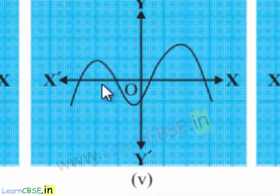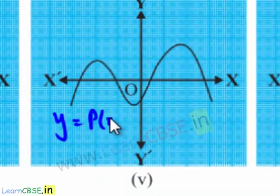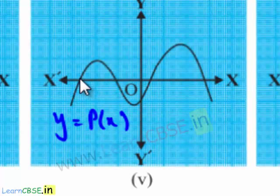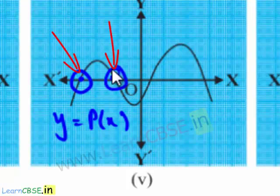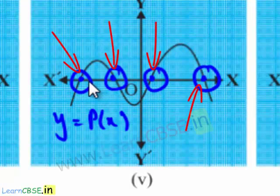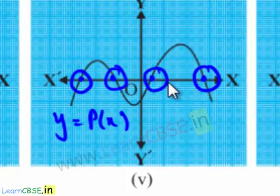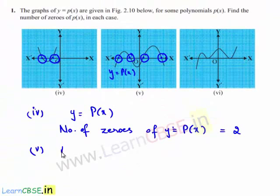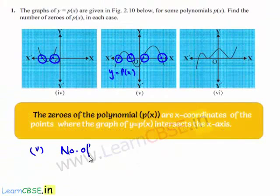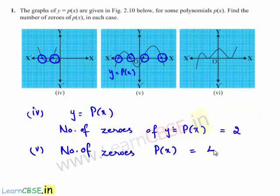In the fifth case, the graph y equal to p of x is intersecting the x-axis at this point, this one, this one, and this one. Therefore, we have four points at which y equal to p of x intersects the x-axis. So we can conclude the number of zeros of the polynomial p of x is equal to 4.